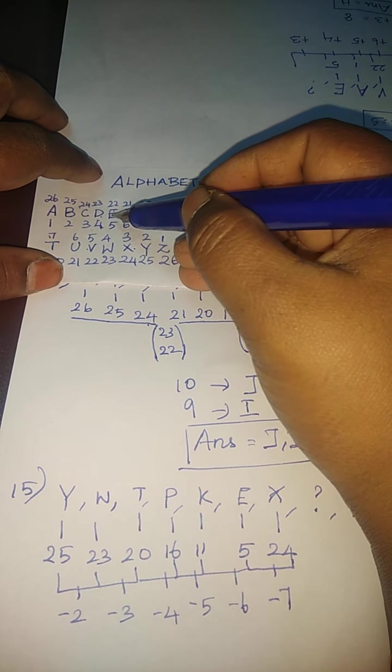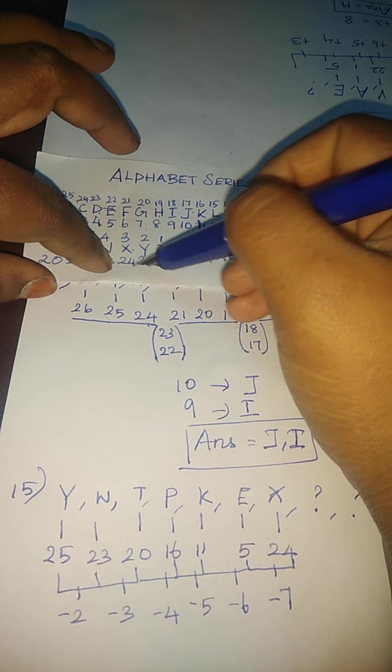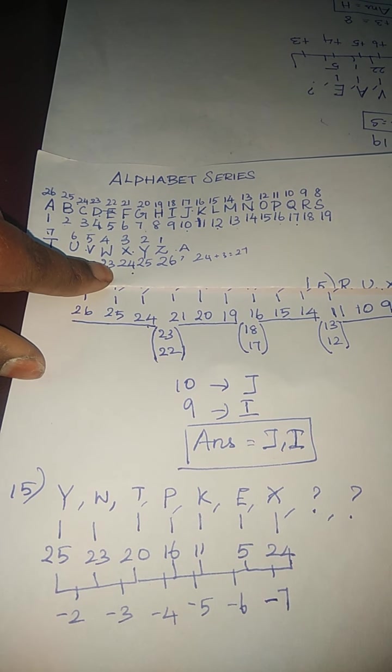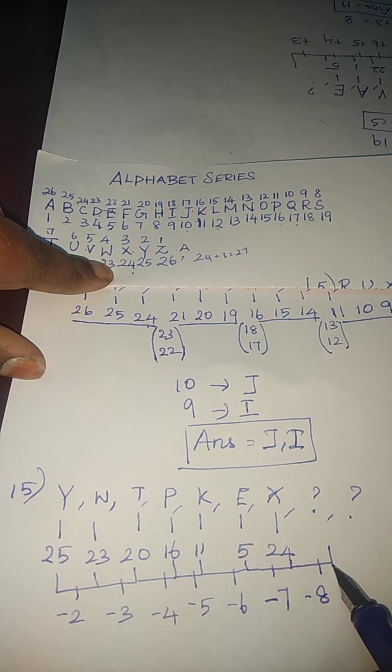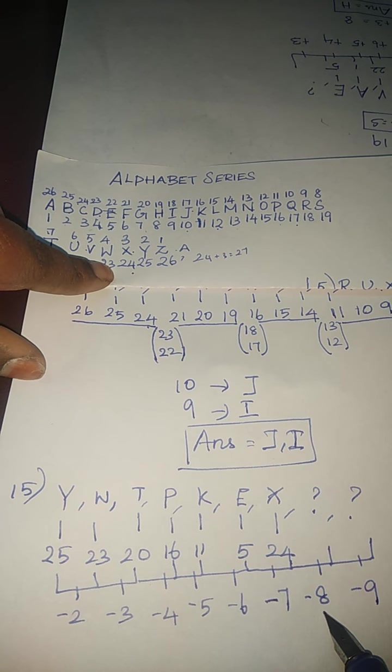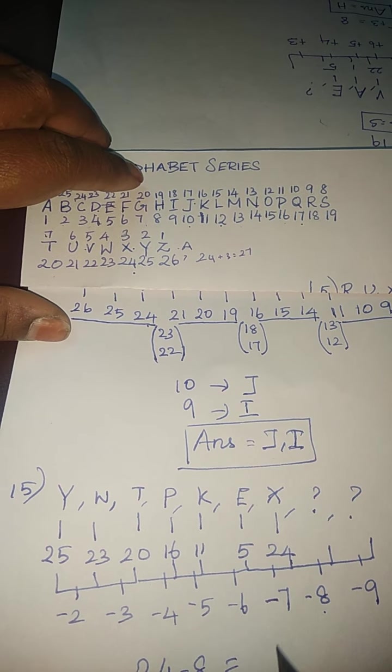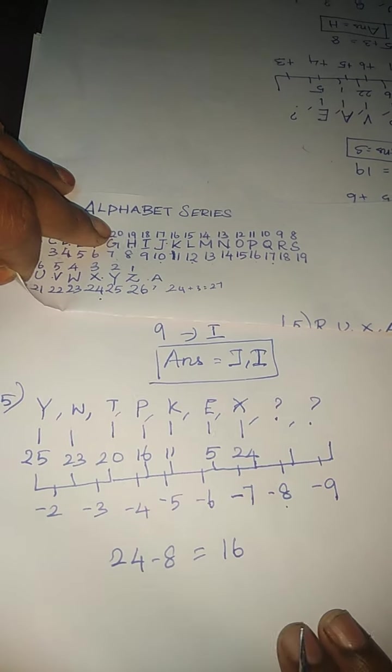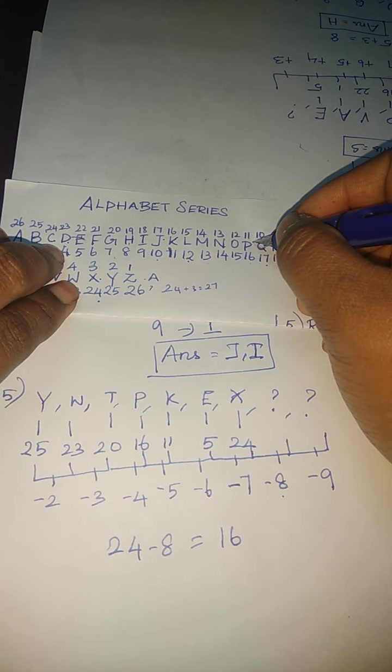If we subtract 5 from the reversal order, we can get X as the 24th number after subtracting minus 7. Then, what comes next? It's minus 8, then minus 9. 24 minus 8 is 16.